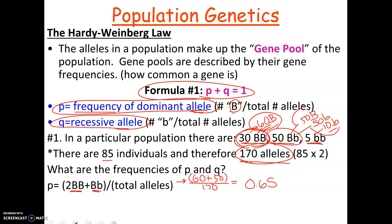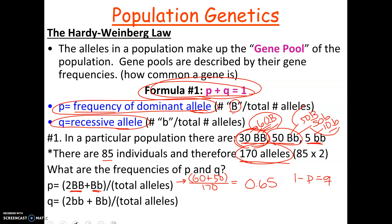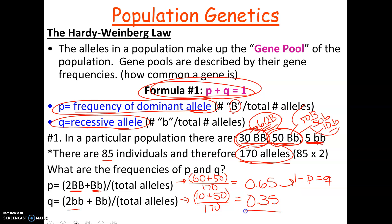The beauty of the formula p plus q equals 1 is that you can get q simply by doing 1 minus p, which gives q equals 0.35. You can also do it the long way: double the number of little b little b individuals — that's 10 — plus 50 copies of little b from the heterozygotes, over 170, which also gives 0.35. So these frequencies of p and q tell us how common the dominant and recessive alleles are in the population.